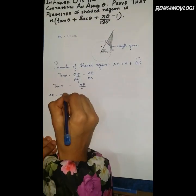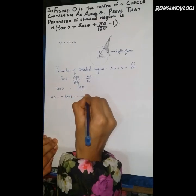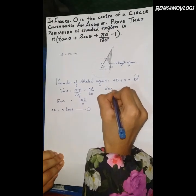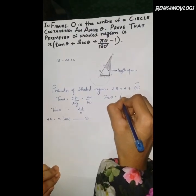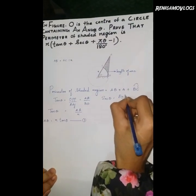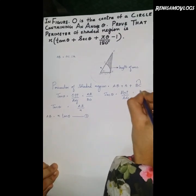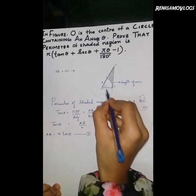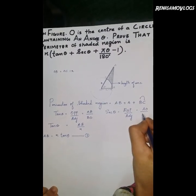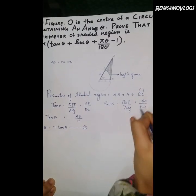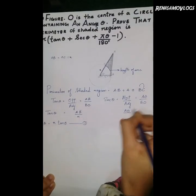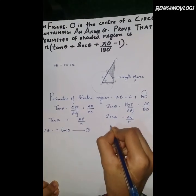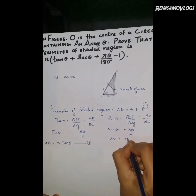AB is equal to R tan theta; that's step 1. Then sec theta is hypotenuse by adjacent: AO by adjacent OB. AO by BO is R, so AO is equal to R sec theta.